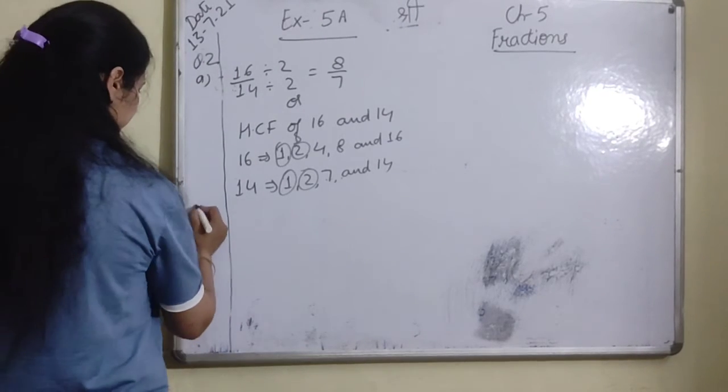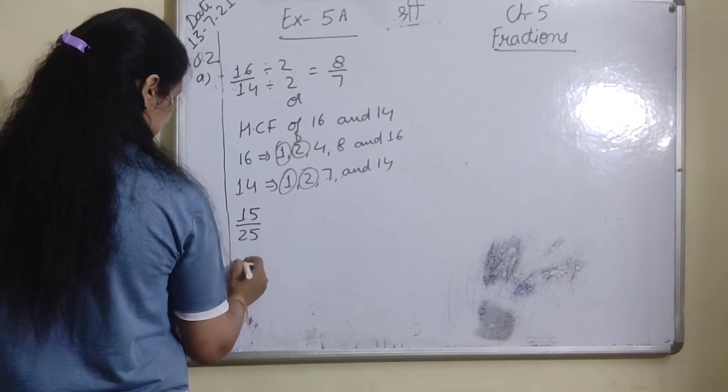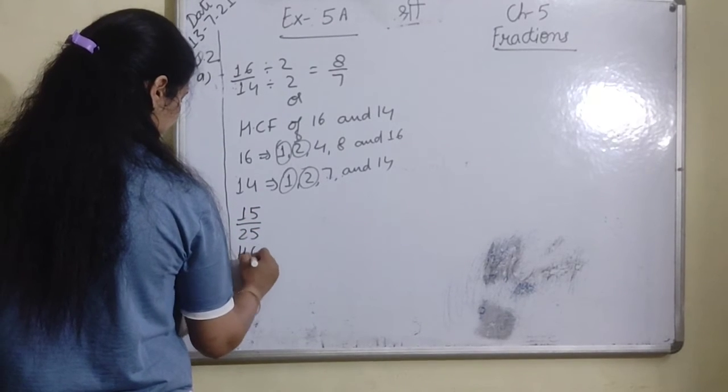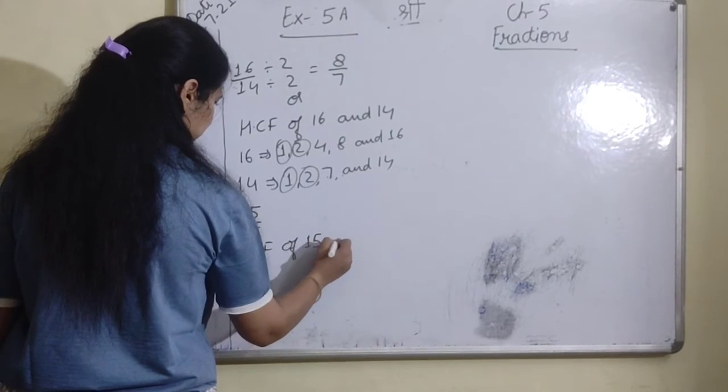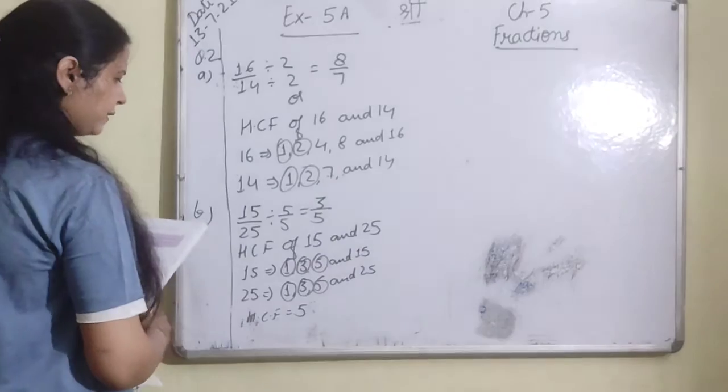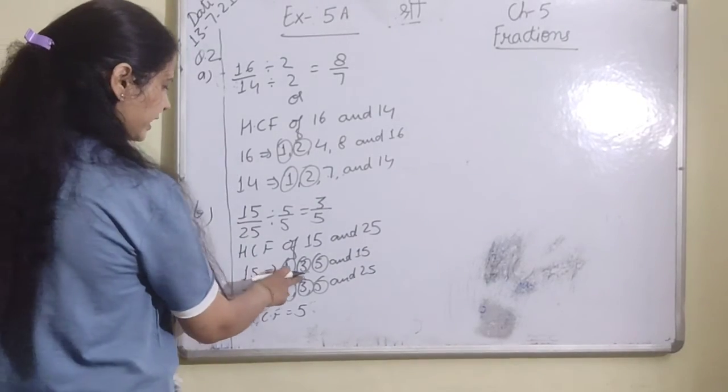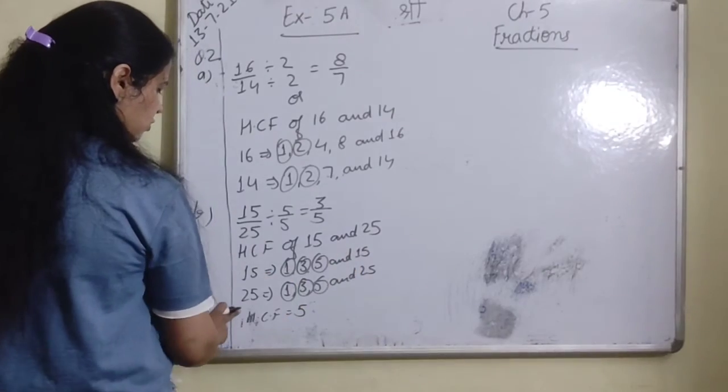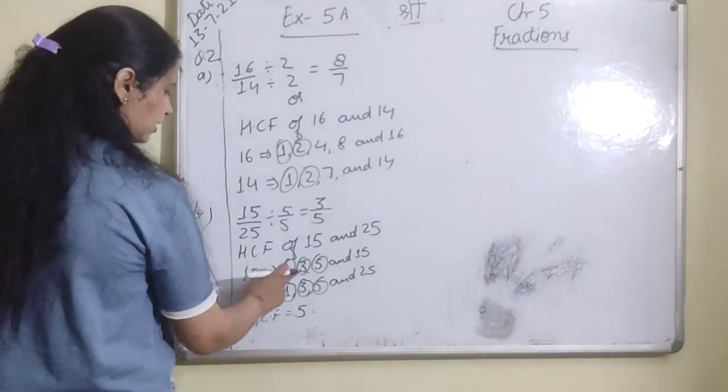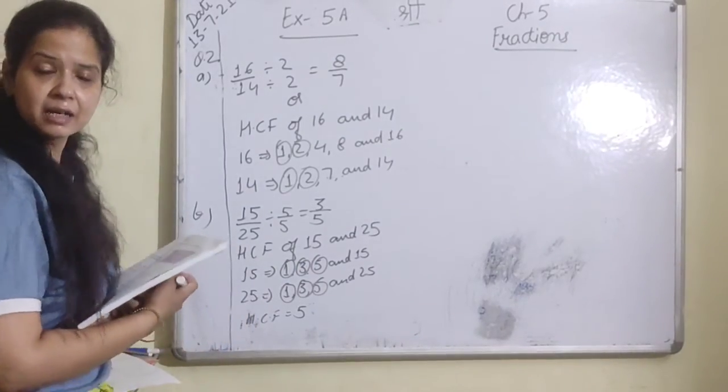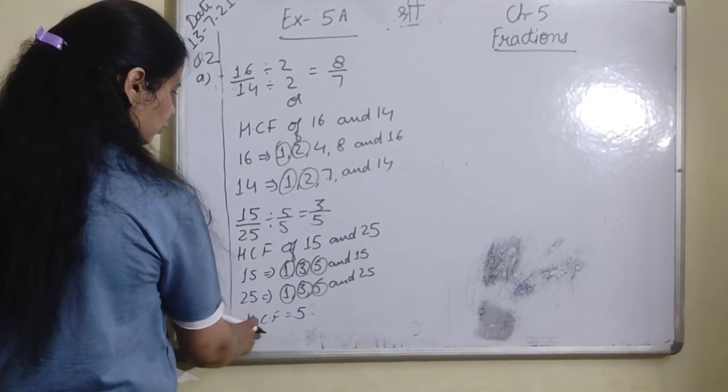Part b. 15 upon 25. HCF of 15 and 25. 15 factors are 1, 3, 5, and 15. And 25 factors are 1, 5, and 25. Although 1 and 5 are common factors, we need the highest common factor. So 5 is the HCF, HCF equals 5.